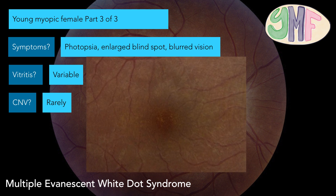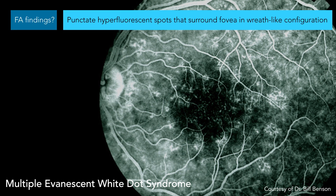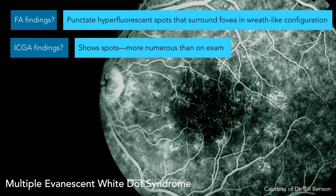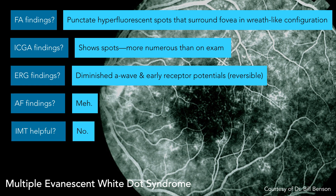Here's our granular pigmentary changes — not the best picture for that, but you can kind of see some granular things there. Here's that wreath — again, I wouldn't go, 'oh, that looks like a Christmas wreath,' but that's kind of what we're talking about here. FA findings: punctate hyperfluorescent spots that surround the fovea in a wreath-like configuration. ICG findings: more numerous than FA. ERG findings — this is the only other ERG question besides AZOR: you get diminished A-wave and early receptor potentials. Both diminished, and it's reversible because this usually has a very benign course. Autofluorescence: meh. IMT helpful? Not usually, because it's benign and self-limited.